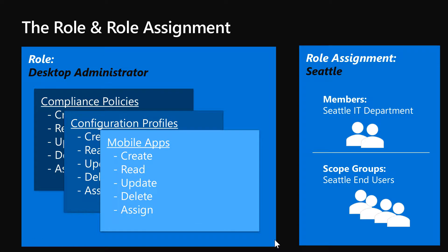Let's start by reviewing the role and role assignment. Our role named the desktop administrator has three different resources associated with it: compliance policies, configuration profiles, and mobile apps. Each of those resources has a set of permissions — create, read, update, delete, and assign. In the case of our mobile apps, there is an associated role assignment called Seattle, with member group Seattle IT department and scope group Seattle end users.